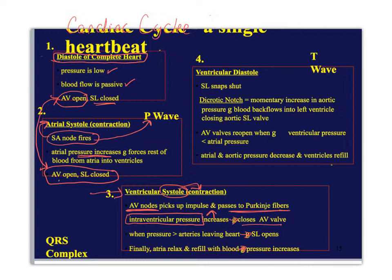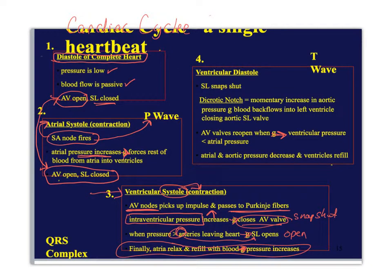The next step is ventricular systole — contraction of the ventricles. The AV node picks up the electrical signal from the SA node and passes it along to all the Purkinje fibers, where eventually the signal goes through all the gap junctions and the ventricles contract. When they do that, intraventricular pressure increases, which closes the AV valves. The pressure continues to increase — especially with the AV valves closed — which causes the semilunar valves to open. That pushes blood from the ventricles into the pulmonary trunk and the aorta. During this time, the atria have been relaxing and passively filling with blood from the vena cava and the pulmonary veins. All of this corresponds to the QRS complex.